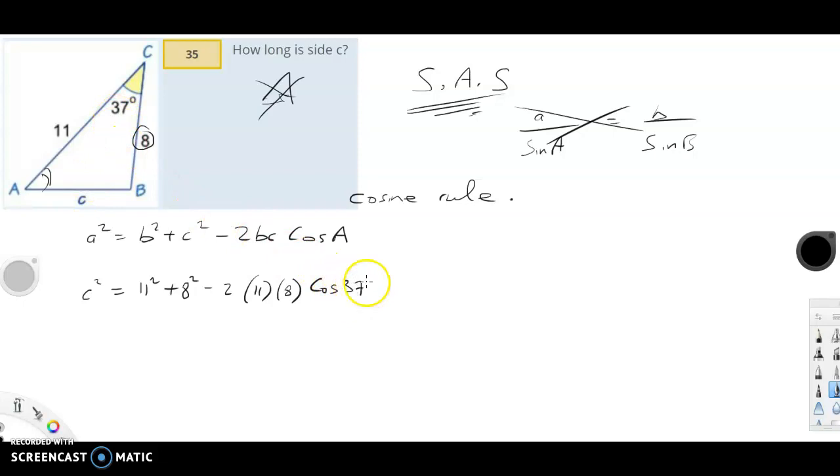Basically we can bang all that there into the calculator and it'll boil down to one number. So we have 11 squared plus 8 squared minus 2 multiplied by 11, multiplied by 8, multiplied by cos 37 in brackets, and I get 44.